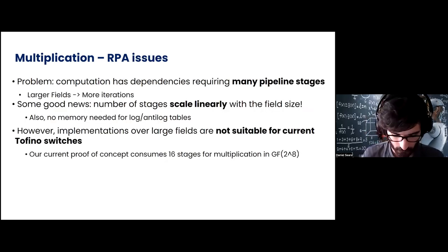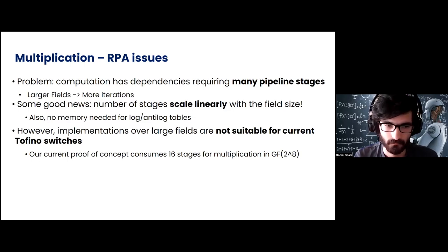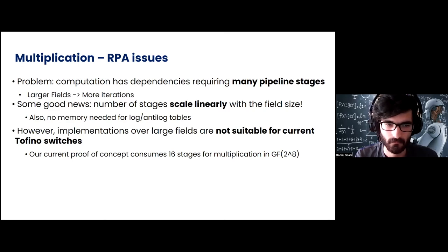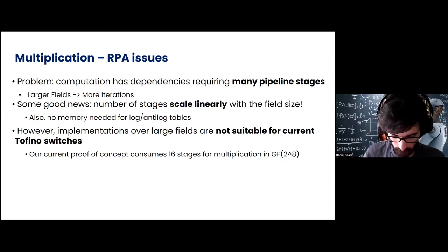This has apparent issues: the computation has multiple data dependencies that require many pipeline stages, and for larger fields, more iterations are needed. The number of iterations is linear with the number of bits needed to represent the field — which is better than the exponential memory problem with tables — but implementations of large fields are not really suitable for current Tofino switches, which don't like doing a lot of iterative algorithms. We have a proof of concept that consumes 16 stages for multiplication in GF(2^8).